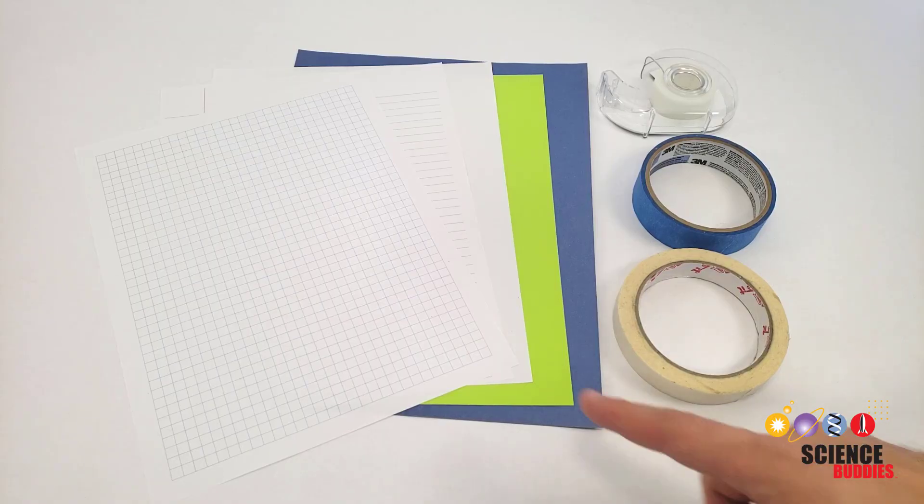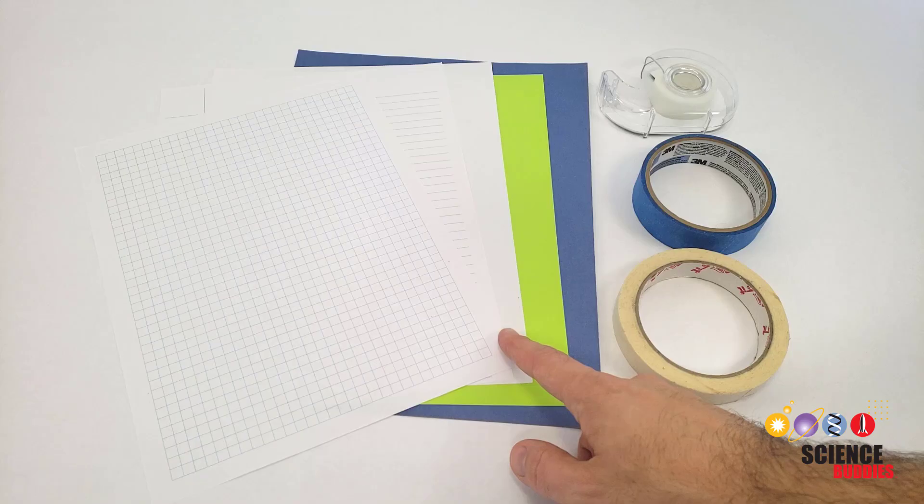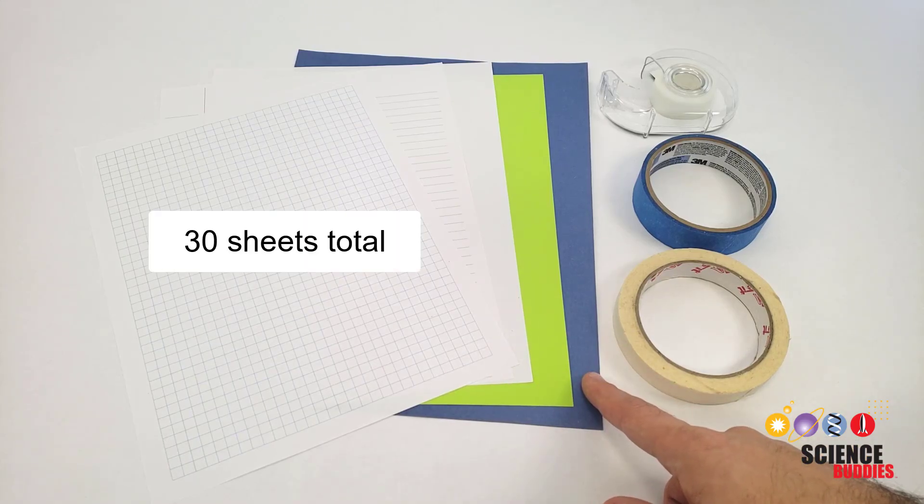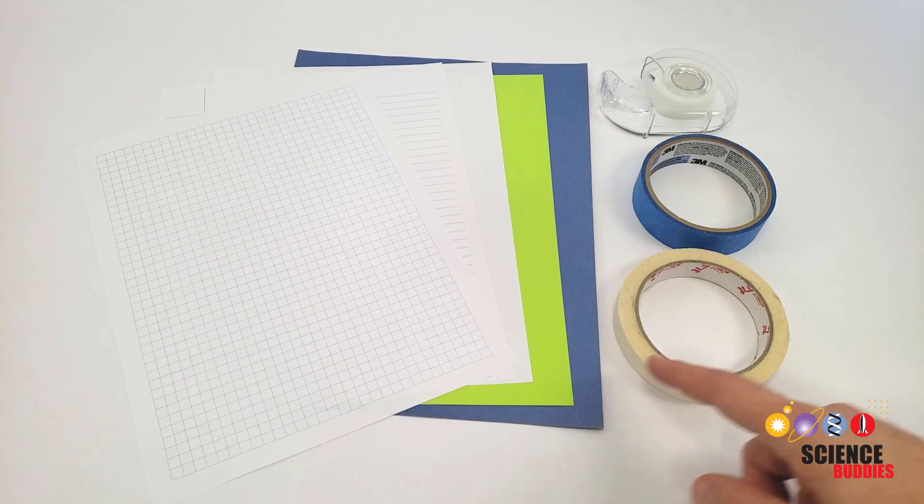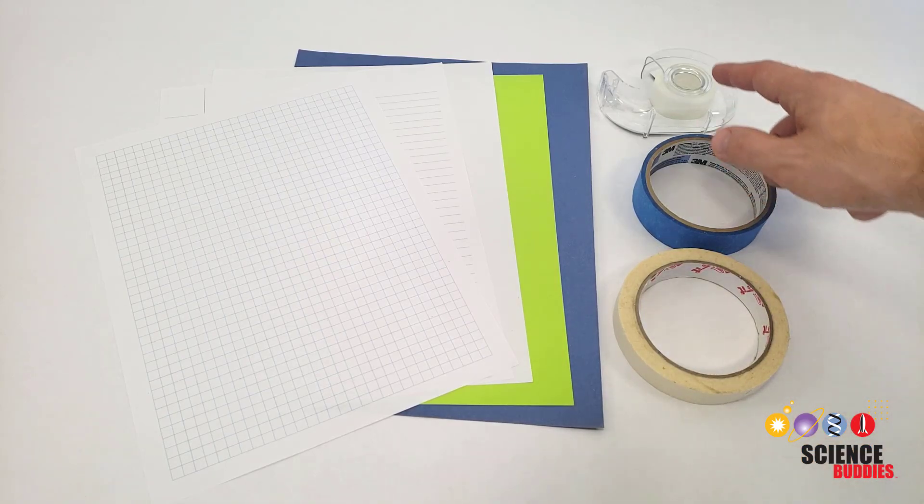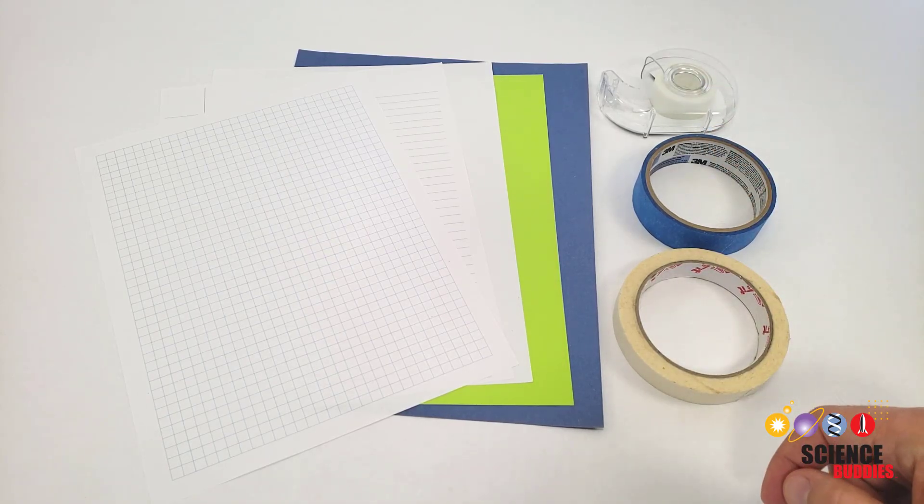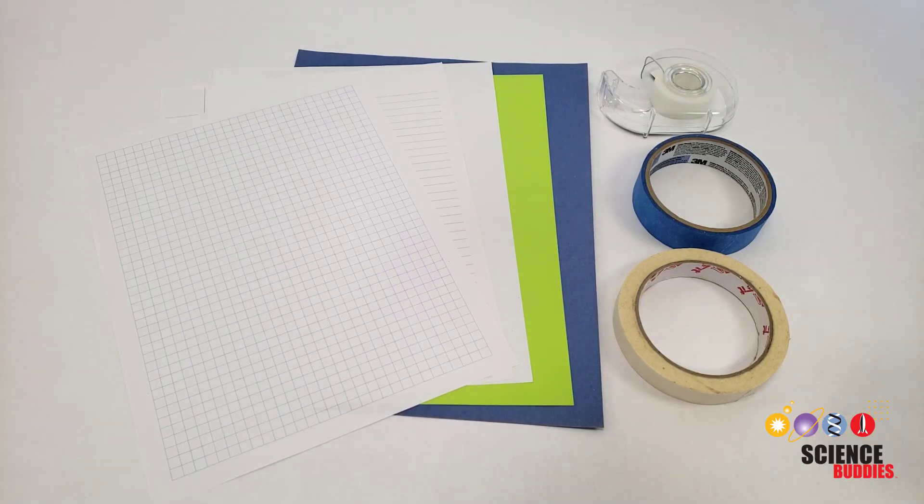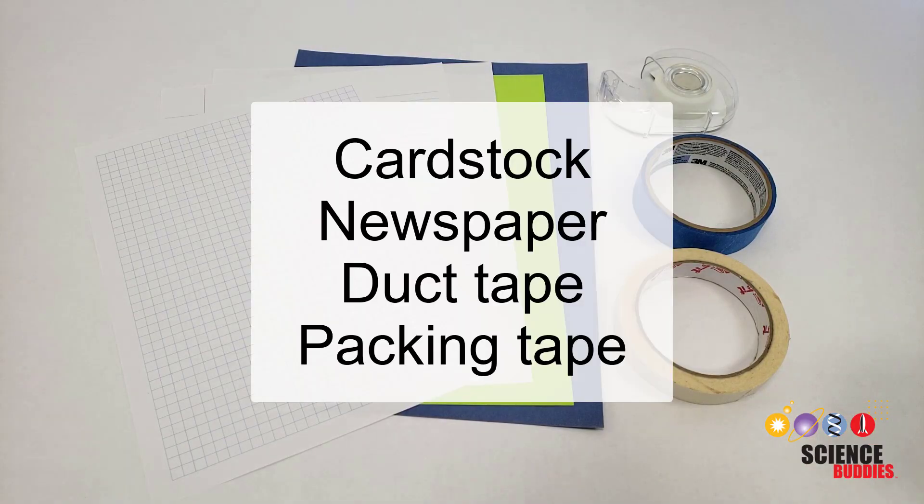You can only use paper or tape to build your ball run. You can use graph, notebook, printer, or construction paper, up to 30 sheets total, along with one roll of masking, painters, or clear office tape, up to one inch in width. Other types of paper, like cardstock or newspaper, and other types of tape, like duct tape or packing tape, are not allowed.